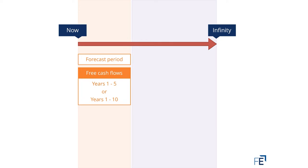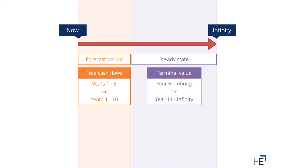However, thereafter we assume the company enters some kind of steady state. It's now a mature company. It's during this period that we calculate the terminal value, and this will represent the value of the remaining years, year six to infinity or year eleven to infinity.